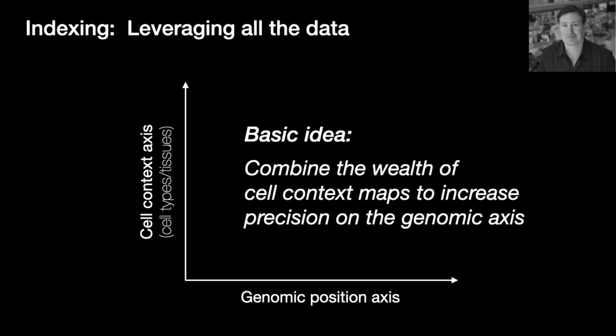And the basic idea here is that you can combine the wealth of these cell context maps to increase the precision on the genomic axis because many of the sites turn up over and over again in many different cell and tissue contexts.